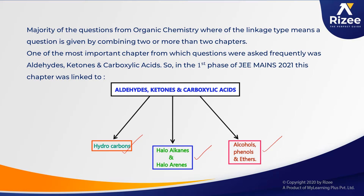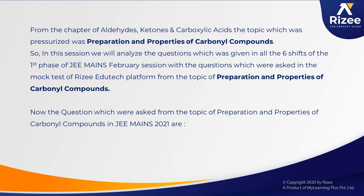Combining Hydrocarbons and Aldehydes, Ketones and Carboxylic Acid, some questions were asked, as well as with Haloalkanes and Haloarenes and Alcohols, Phenols and Ethers. From the chapter of Aldehydes, Ketones and Carboxylic Acid, the topic presented many times was Preparation and Properties of Carbonyl Compounds. In this session, we will analyze questions given in all six shifts of the first phase of JEE Mains 2021 February session alongside RISE EduTech platform mock test questions on the same topic.